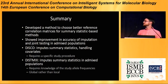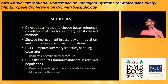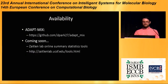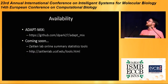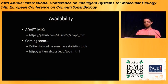Similarly, DISC-MIX imputes summary statistics in admixed populations but requires knowledge of the study allele frequencies, which are occasionally but not always provided with summary statistics. It also estimates on a global rather than local scale, and as I've emphasized, local ancestry is extremely important for admixed populations. The software is available on GitHub called DATMIX. Keep an eye out on the Zaitlin Lab webpage because we're working on an online summary statistics tool where you can simply upload your data and do all of the analysis online without having to download anything.